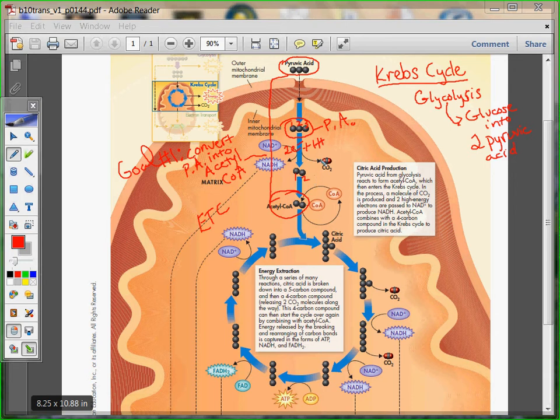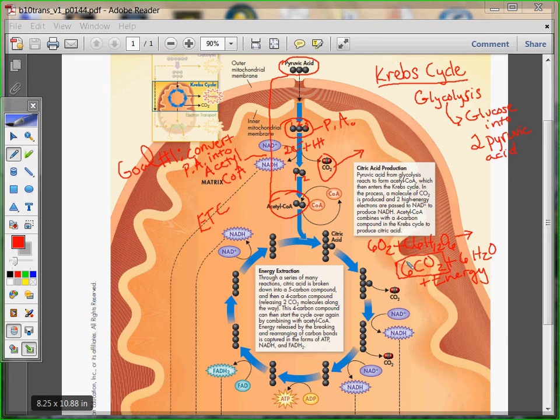And so, what we're going to have to do is remove a CO2 molecule. And as we know from our overall equation, that CO2 is indeed a product of cellular respiration. And this is where that product comes from, is the Krebs cycle.